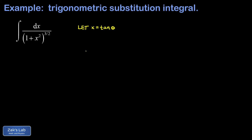The point is that the denominator piece is now going to be 1 plus tangent squared, and there's an identity for that: 1 plus tangent squared is secant squared. We still have to transform the differential dx, so dx is going to be the derivative of tangent, which is secant squared theta times d theta.